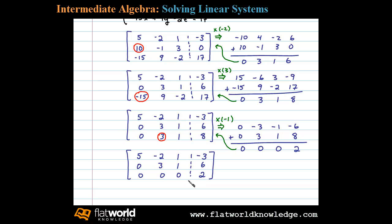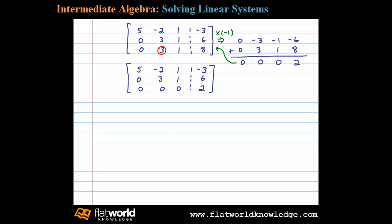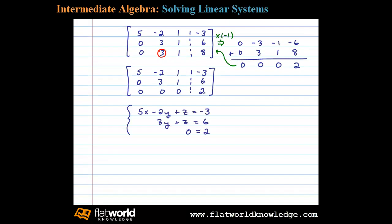This is apparent if we write this as a linear system. You can see that we have an equation 0 equals 2, which is false. This tells us that this linear system is inconsistent and that there is no solution.